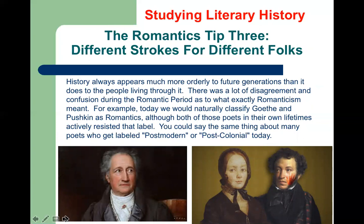Another tip is that when we study the past, it always looks a lot simpler than it did to the people at the time. We have to imagine how your great-grandchildren will look back on the year 2020 and think life was simpler back then. When we look back at an era like Romanticism, it sometimes seems easy just to classify all the poets as Romantics. But some of the poets we would automatically call Romantics today, like Goethe or Pushkin, actually had a lot of difficulty calling themselves that. It was a lot more complicated to the people who lived through it.